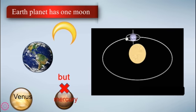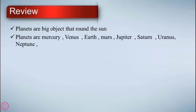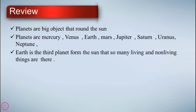Planets are big objects that go around the Sun, and there are eight planets: Mercury, Venus, Earth, Mars, Jupiter, Saturn, Uranus, and Neptune. Earth is the third planet from the Sun, and so many living and non-living things are there.